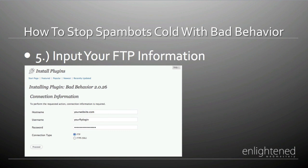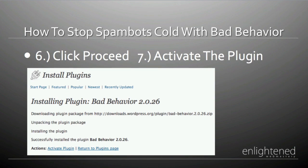Once you do this, you're going to need to input your FTP information. Note that this is not your WordPress login — it's not the admin or any default login setting. This is the one you set up when you created your FTP account when you first created your hosting account. Put in your host name, your FTP username, and your FTP password, making sure the connection type is set to FTP, then click Proceed. Next, activate the plugin — click the Activate Plugin button at the bottom. Don't click off the page until you see that option.